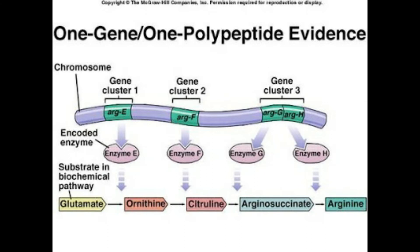Beadle and Tatum concluded that genes produce their effects by specifying the structure of enzymes, and that each gene encodes the structure of one enzyme. They called this relationship the one gene one enzyme hypothesis. Because many enzymes contain multiple polypeptide subunits each encoded by separate genes, the relationship is today more commonly referred to as the one gene one polypeptide hypothesis.